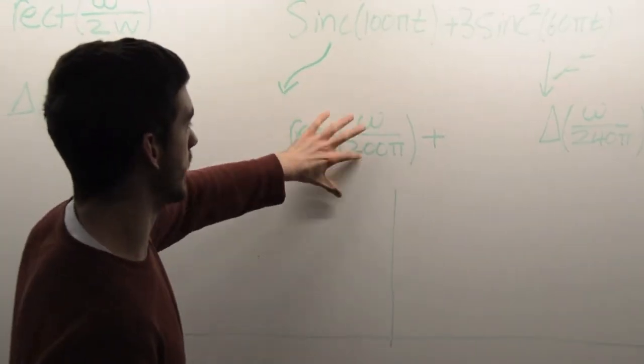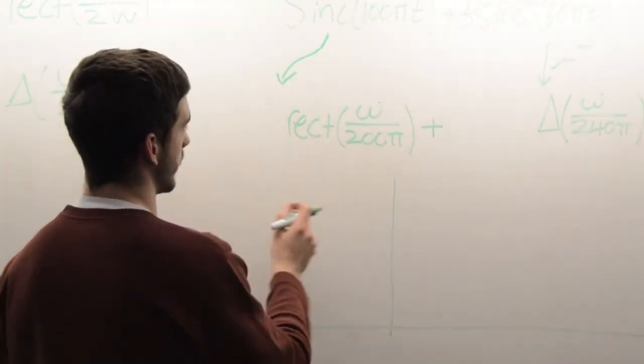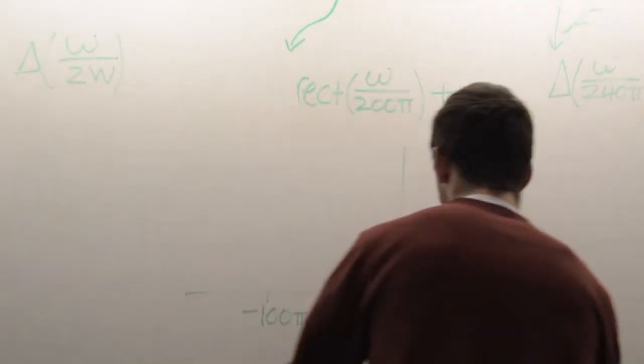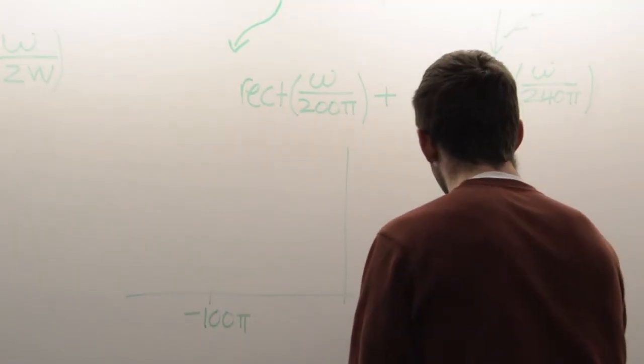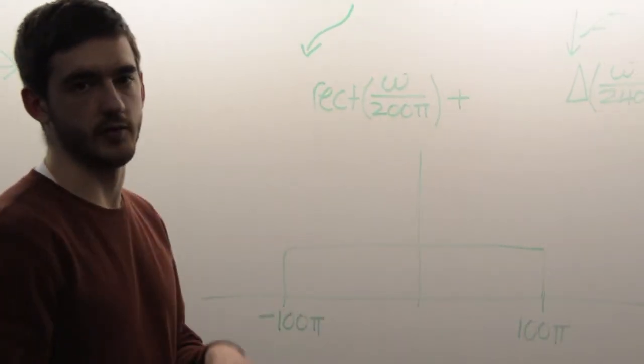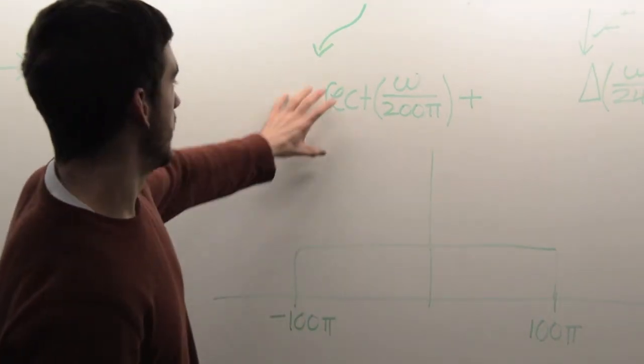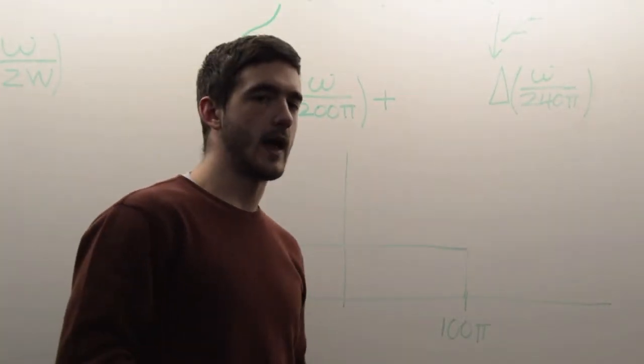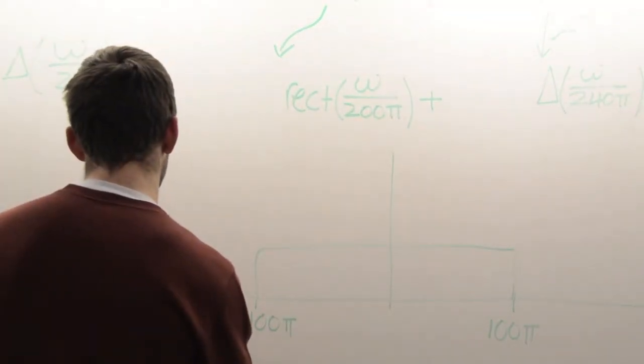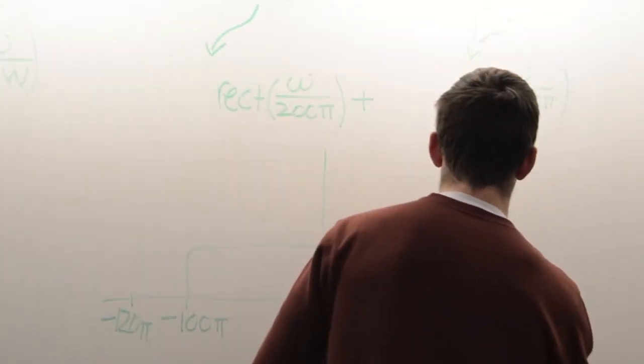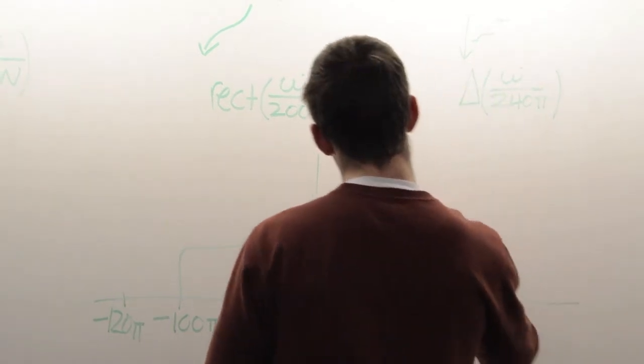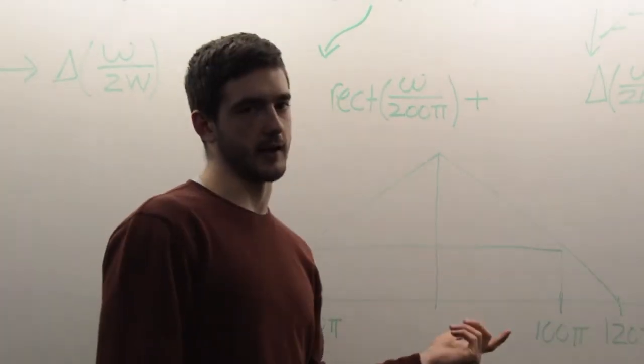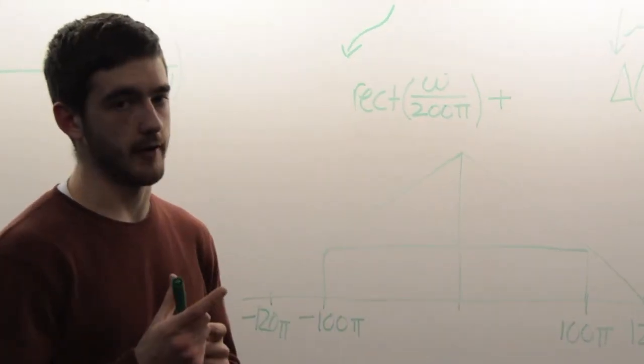Now all we have to plot is rect of omega over 200 pi. We know that is a rectangular function from negative 100 pi to 100 pi. This amplitude is arbitrary for what we're trying to figure out. Now we have this rectangle function and now we need to plot this triangle function, which we know is going to go from negative 120 pi to 120 pi. If you look, the triangle kind of encompasses this rectangle. That's because the bandwidth of this triangle function is a little bit higher than the rectangle function.